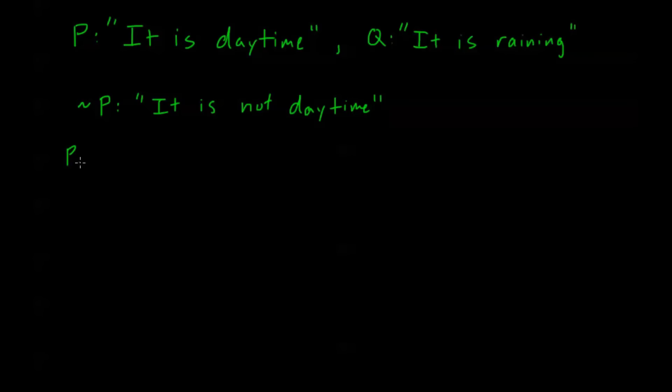This P and Q would be, it is daytime and it is raining. And this P or Q, this would be, it is daytime or it is raining.